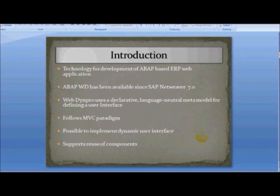They started with something called ITS — Internet Transaction Server — which is used in older versions of the SRM component of SAP. There are two problems with ITS: if you want to build a UI in ITS, you need to know HTML, HTMLB (HTML for Business, which is an adapted version of HTML), and also JavaScript. So there are four languages you need to learn — HTML, JavaScript, HTMLB, and ABAP — which is not quite good.